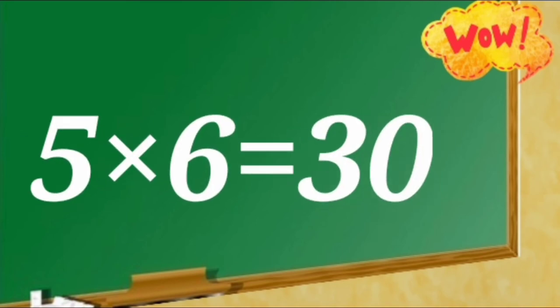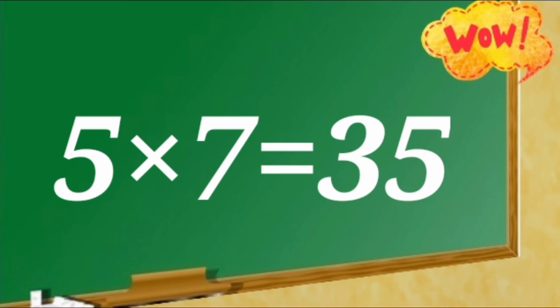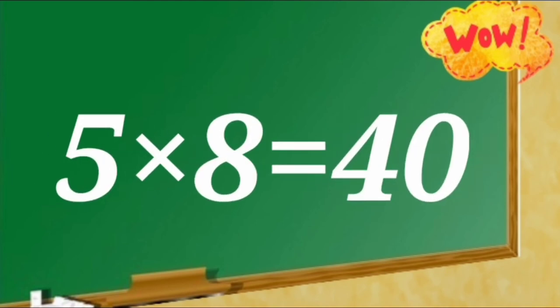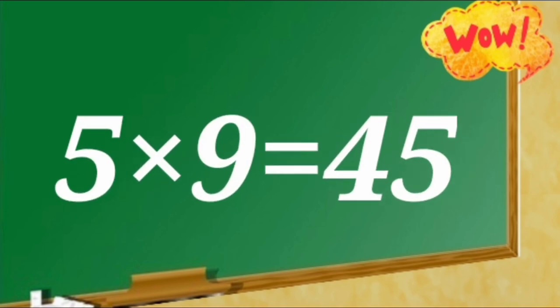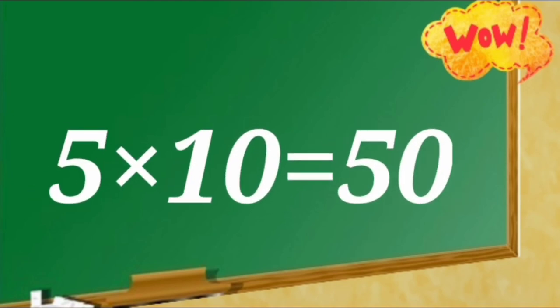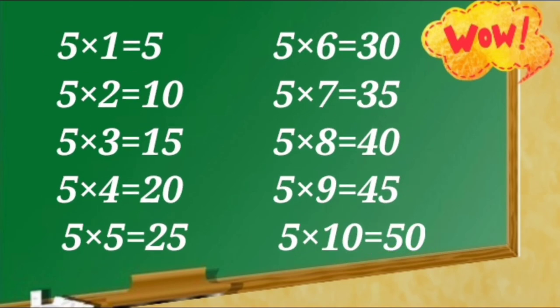5 sixes are 30, 5 sevens are 35, 5 eights are 40, 5 nines are 45. 5 ones are 5, 5 twos are 10, 5 threes are 15, 5 fours are 20, 5 fives are 25, 5 sixes are 30, 5 sevens are 35, 5 eights are 40, 5 nines are 45, 5 tens are 50.